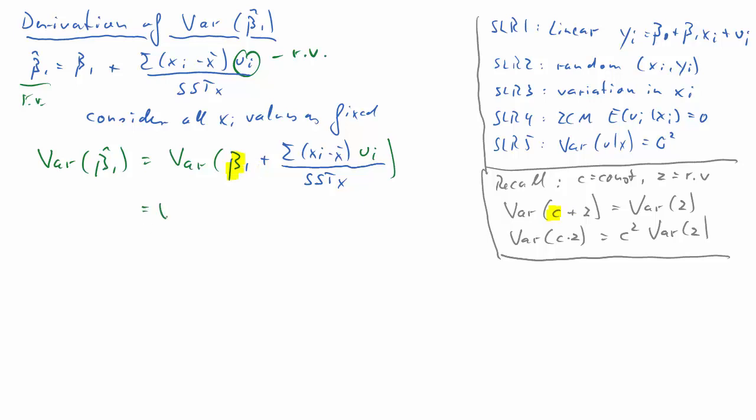For starters the equivalent of that constant c is our beta1. That's a fixed value although we don't know it but it's not a random variable so it will just drop. It will not contribute to the variance. Now we are left with the variance of our random variable and a factor. So something like the c. So what shall we treat as the c? Let's start with this one, the sstx in the denominator. So we'll need to take it out and square it. So we get 1 over sstx but squared times the variance of everything that's left.